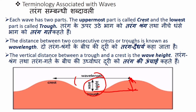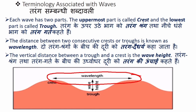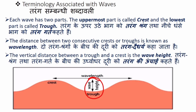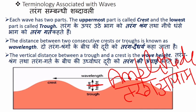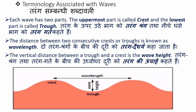The vertical distance between the trough and the crest is the wave height. One half of the wave height is called the wave amplitude. The number of waves passing a given point during one second is known as wave frequency.